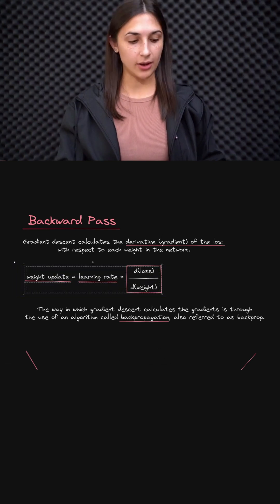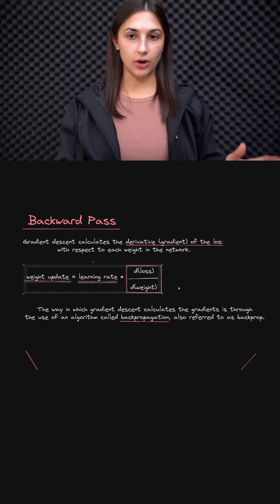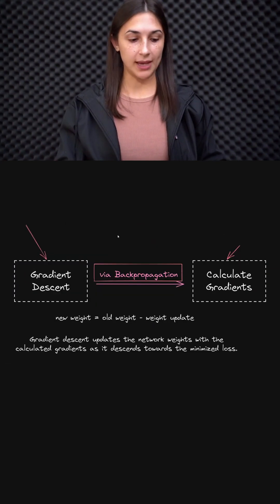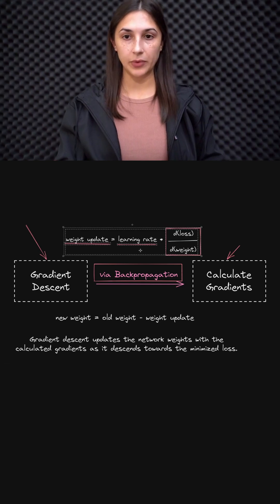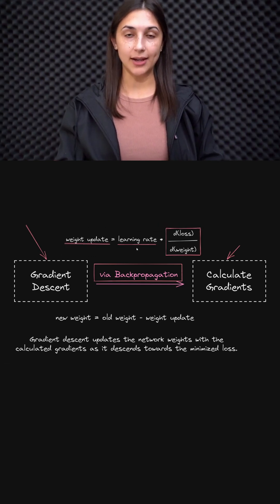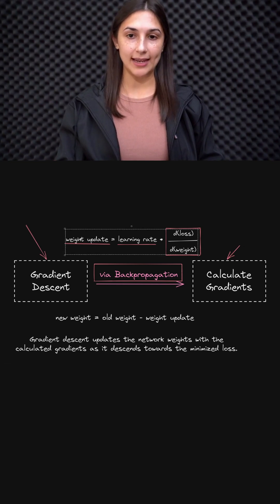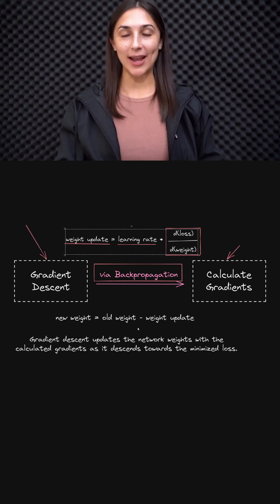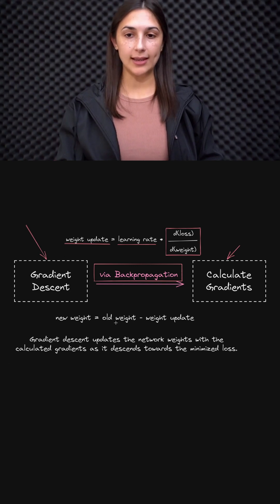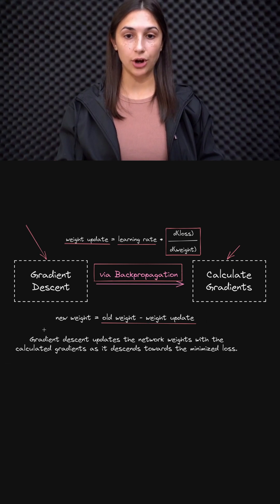Recall that we have this weight update that we are calculating during the backwards pass. We have this weight update that is calculated by gradient descent via back propagation, and this weight update is then going to be used to update the current weights in the network. Specifically, we take the old weight and subtract from it the weight update value, and then this difference is what gives us our new weight.